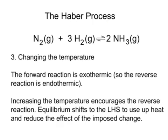What about the change in temperature? In this reaction, the forward reaction is exothermic, which means the reverse reaction is endothermic. If we increase the temperature, the equilibrium will wish to use up that additional heat, and the only way it can do that is to go in the endothermic direction, because an endothermic reaction requires heat. So raising the temperature of this reaction will, in fact, favour the reverse reaction, and we'll get a lower yield of ammonia.